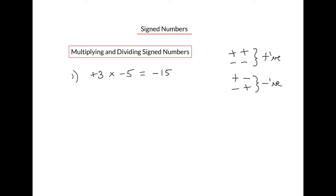Let's look at another example: negative 4 times negative 6. The two signs are the same — both negative — so the answer will be positive. Negative 4 times negative 6 will be positive 24.